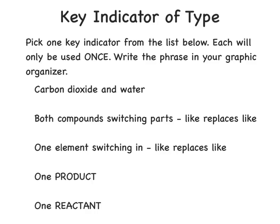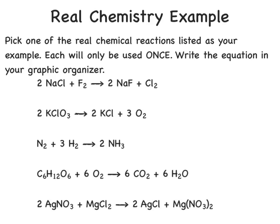Take a moment to read through these five identifiers, or keys, for chemical reactions, and determine which one is the correct indicator for a synthesis or combination reaction. The key for a synthesis reaction is that there is only one product. Look at these chemical equations and see if you can determine which one shows a synthesis or combination reaction. This sample is a combination reaction, and we know that because there is only one product in the reaction.